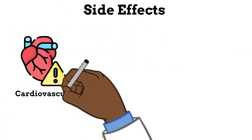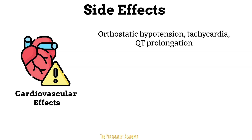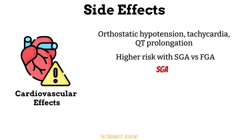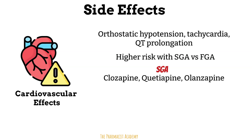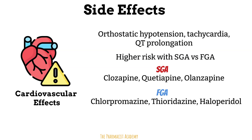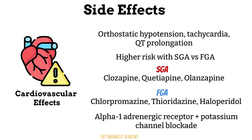Next are cardiovascular effects, which present as orthostatic hypotension, tachycardia, and QT prolongation. The risk is higher with second generation agents versus first generation. The cardiovascular effects are more pronounced with agents like clozapine, quetiapine, and olanzapine. For first generation antipsychotics, it's chlorpromazine, thioridazine, and haloperidol. The mechanism of cardiovascular effects is due to alpha-1 adrenergic and potassium channel blockade — the orthostatic hypotension and tachycardia are more related to alpha blockade, and QT prolongation is due to potassium channel blockade.